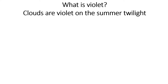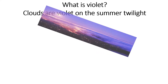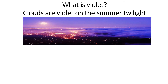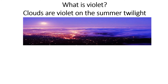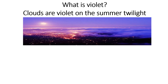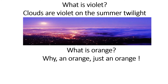What is violet? Clouds are violet on the summer twilight. Violet color — that is clouds at summer twilight, clouds violet color. And what is an orange? Orange is orange. Just an orange.